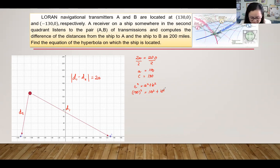So computing 130 squared, that is 16,900 and 100 squared is 10,000. Then we have B squared.